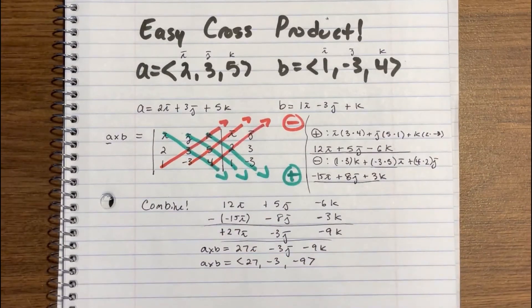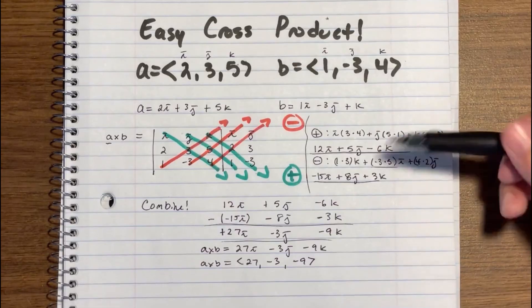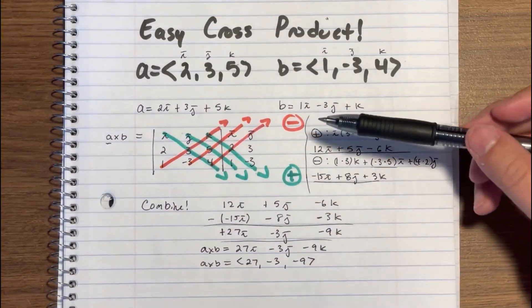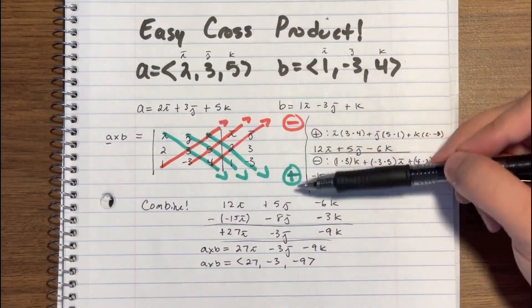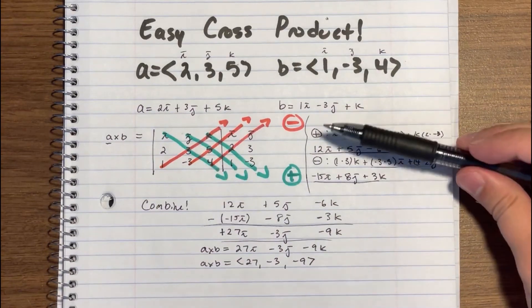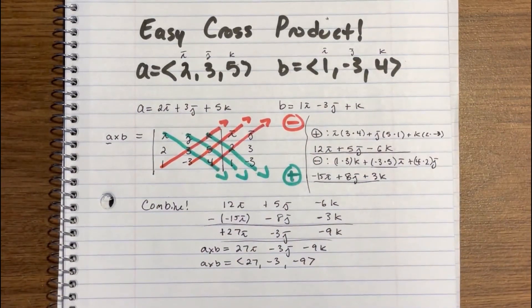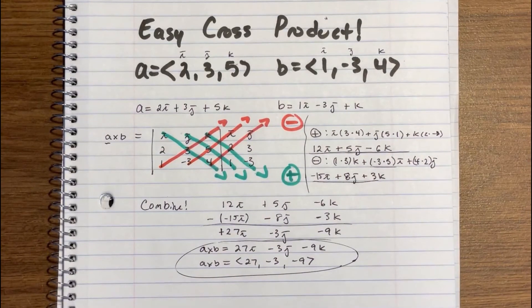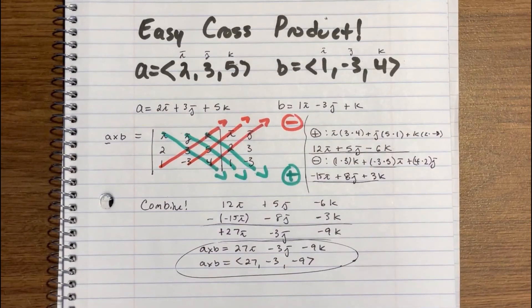That's our cross product — it's really easy. I find this very simple, and it works as long as you remember: start at the top, it's positive; start at the bottom, it's negative. I think it's a little easier than remembering how to do determinants. Hopefully if you guys are using vector cross products, you'll remember to use this method. I hope it helps — I'll see you guys next time. Make sure to like the video, subscribe if you're not subscribed already, and keep checking back for more.